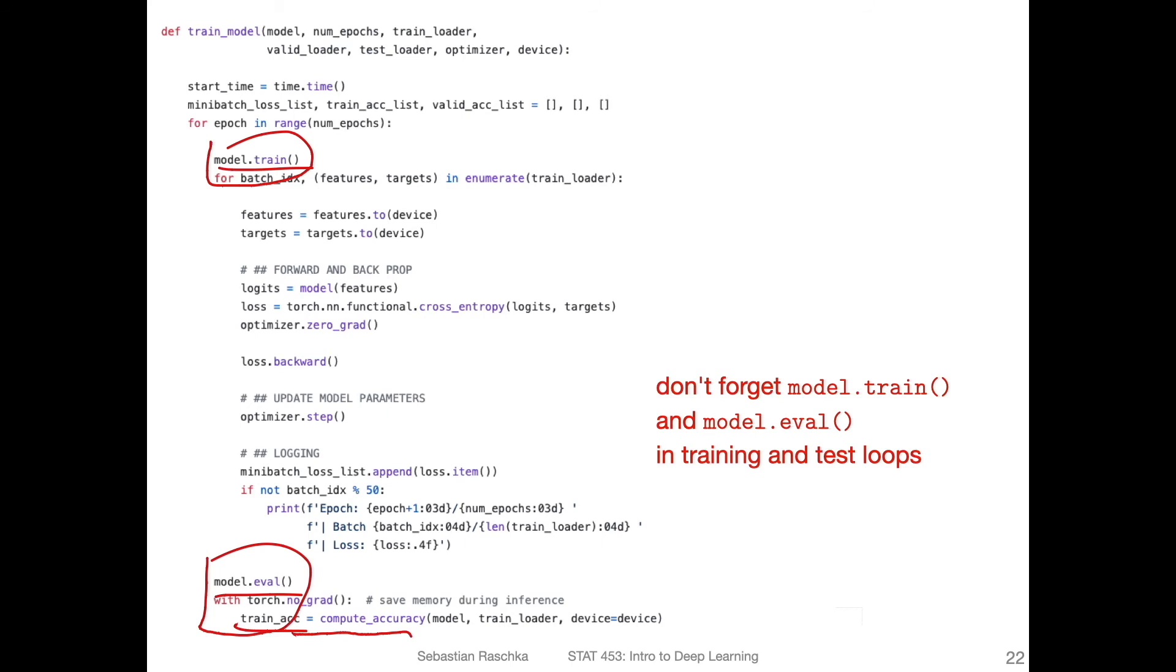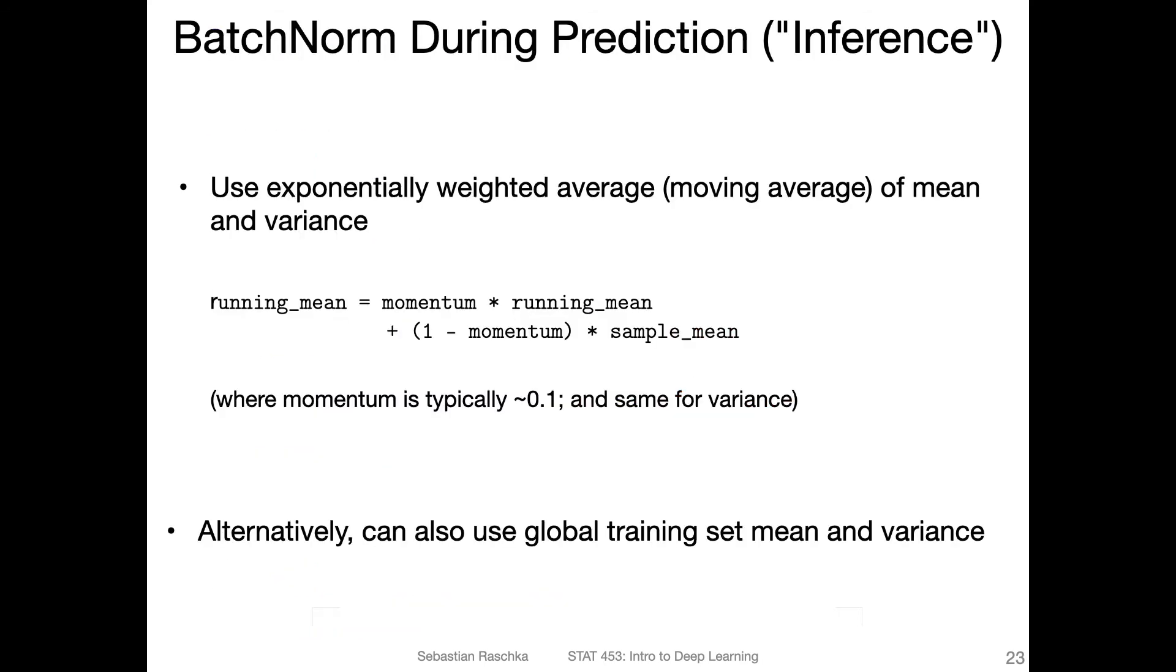In inference you may only have a single data point, right? So let's say you have a Google search engine and there's just one user running a query and you have a network that has batch norm. So you have to normalize, but you don't have a batch of users, just one user. So how do we deal with that scenario?